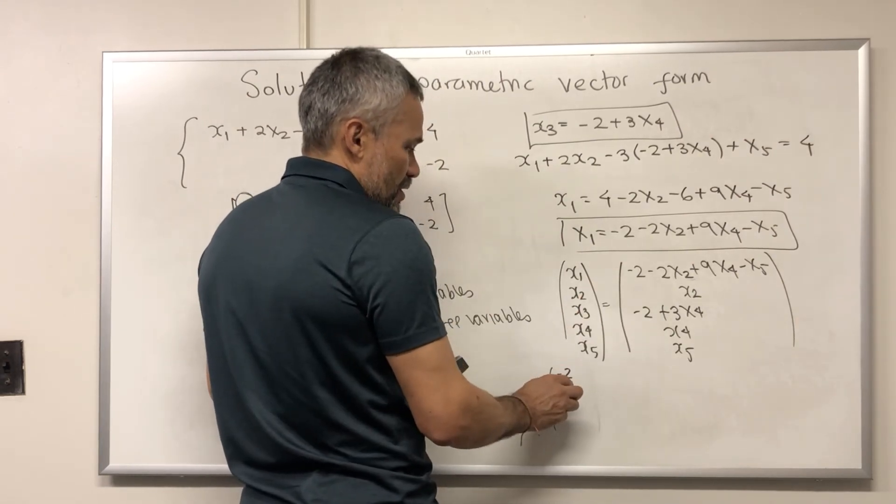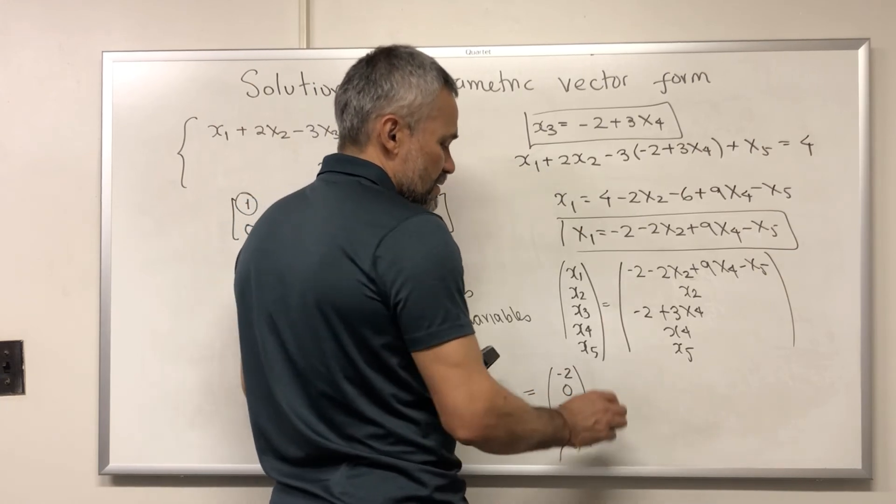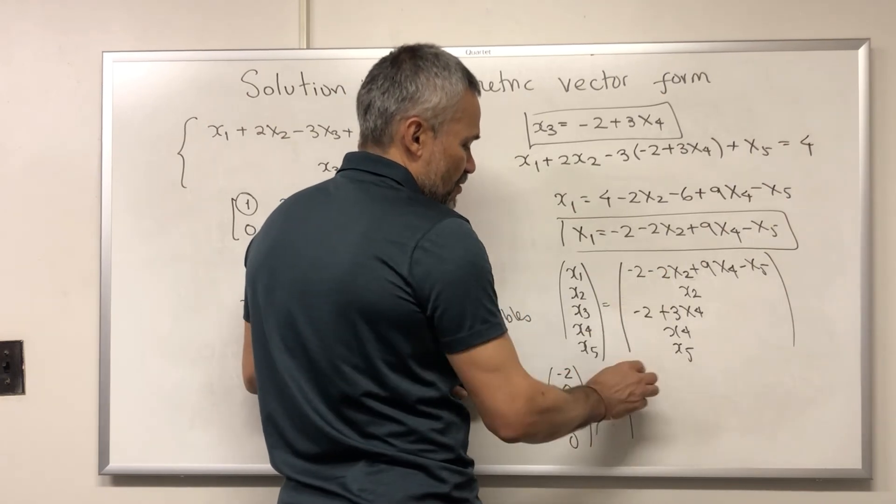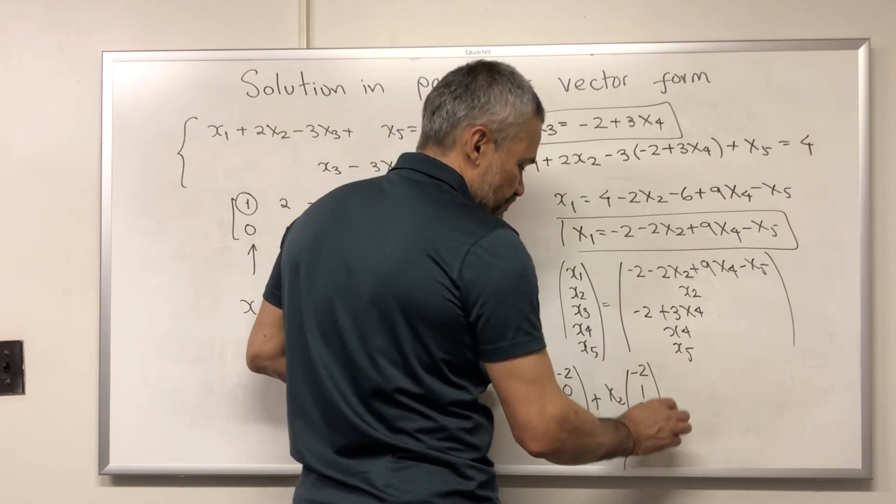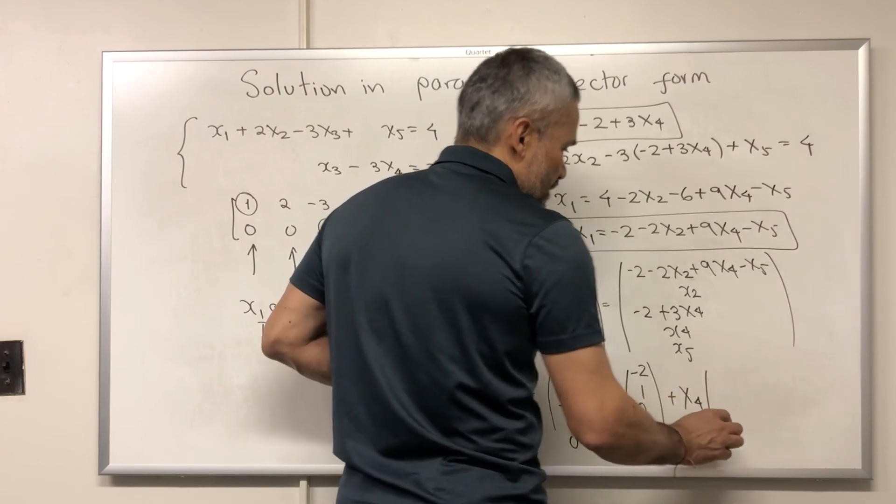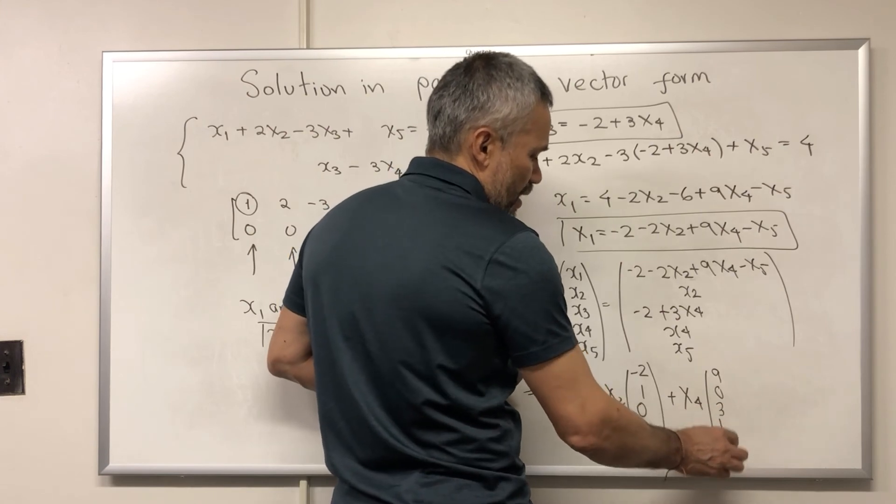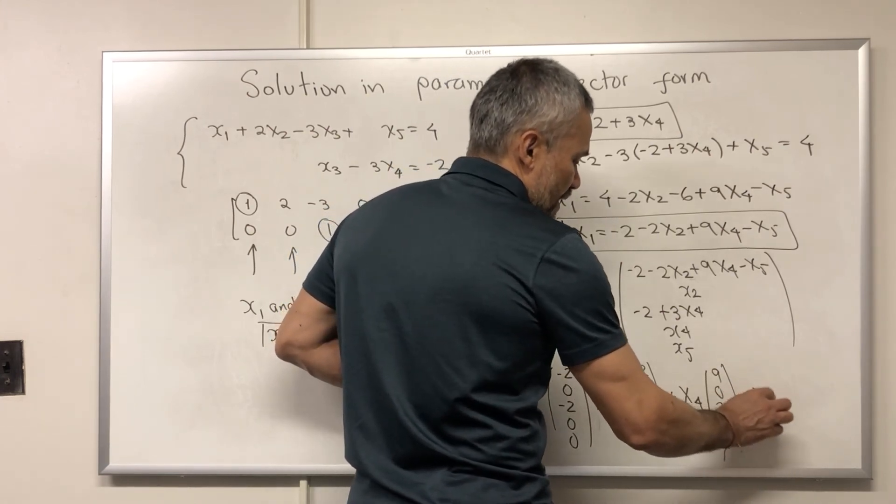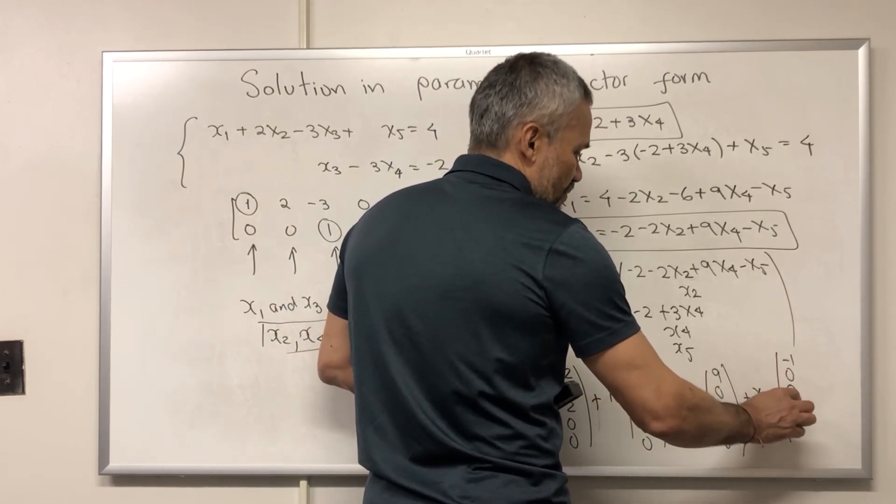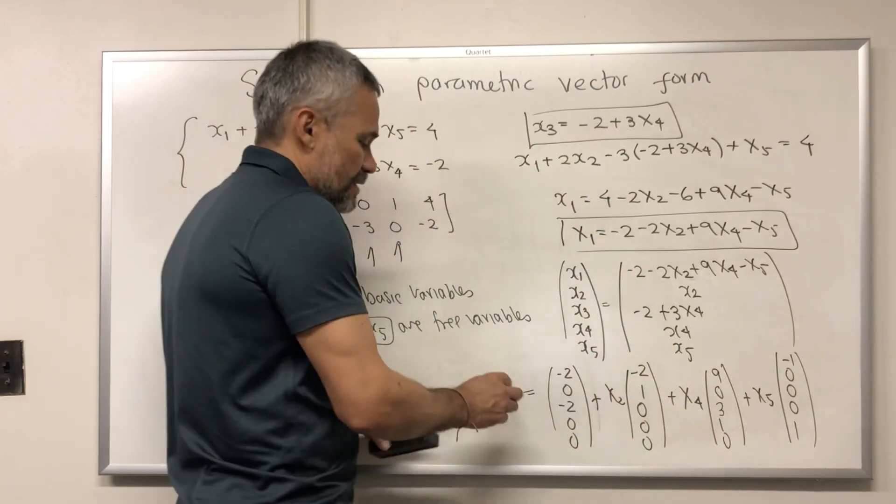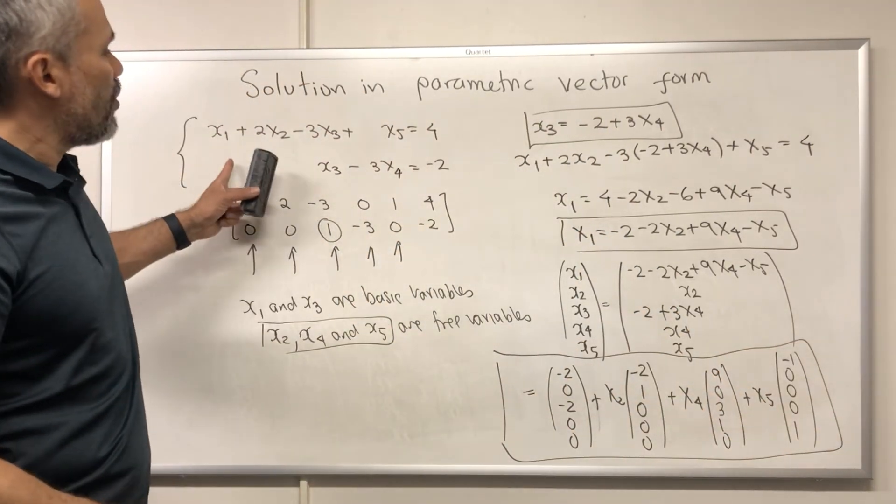negative 2, 0, negative 2, 0, 0, plus x2 times the vector negative 2, 1, 0, 0, 0, plus x4 times 9, 0, 3, 1, 0, plus x5 times negative 1, 0, 0, 0, 1. Then this is what is known as the parametric vector form of this system.